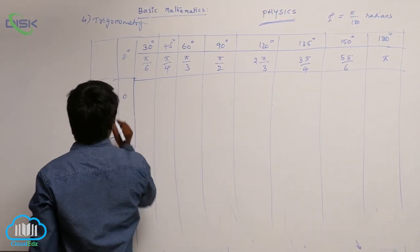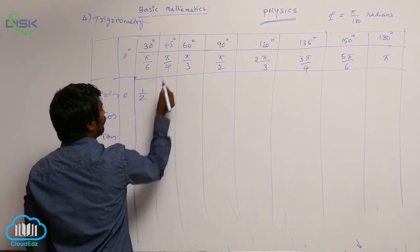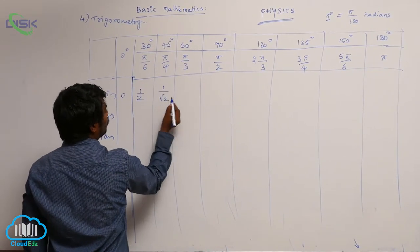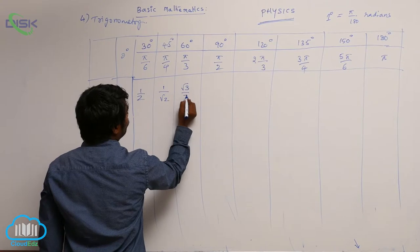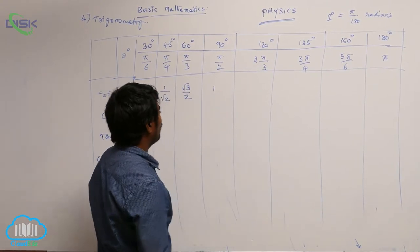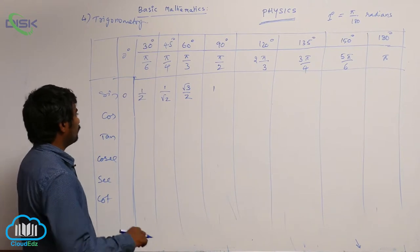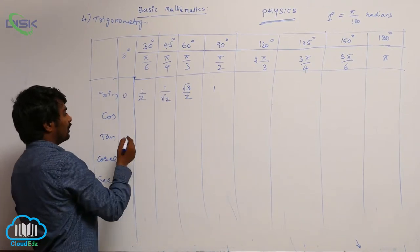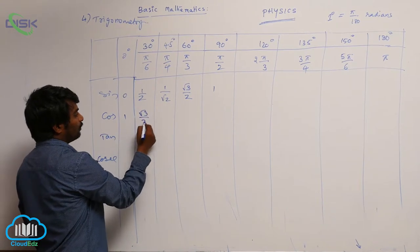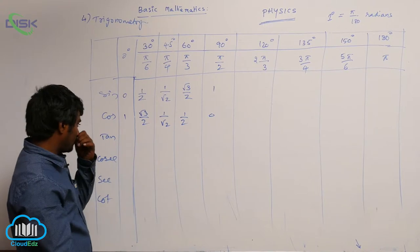Sin 0 will be 0, sin 30 is 1 by 2, sin 45 is 1 by root 2, sin 60 is root 3 by 2, and sin 90 is equal to 1. For cos values, they are the reverse: 1, root 3 by 2, 1 by root 2, 1 by 2, and 0.